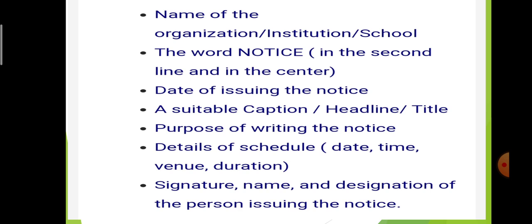When you write a notice, you must remember these points. First, the notice must be enclosed in a box drawn with a pencil. The name of the organization, institution or school you will write at the top. Below that, you will write the word NOTICE in the second line in the center. After this, you will write the date of issuing the notice. In the next line, you will write a suitable caption or title for the purpose why you are writing this notice.